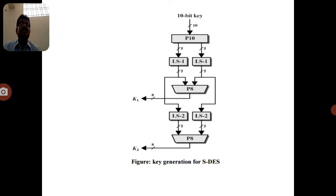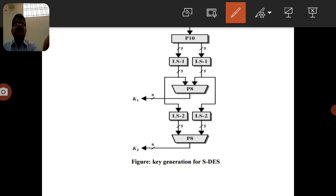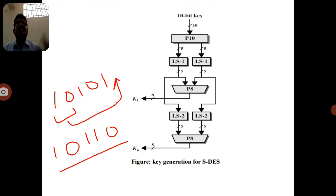After deriving K1, the LS1 data is taken again and the LS2 operation is applied. In LS1, only one bit was shifted; in LS2, two bits at a time are moved from left to right. For example, if the given bits are 10101, after a two-bit left shift the result becomes 10110.